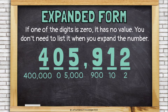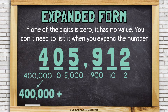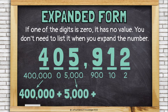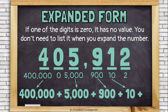And the 4 is worth 400,000. To write this number in expanded form, I will write the values separated by plus signs. I don't have any 10,000, so I don't need to write anything there. I'll skip over that and write: 400,000 plus 5,000 plus 900 plus 10 plus 2.